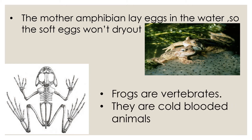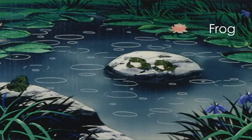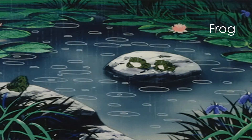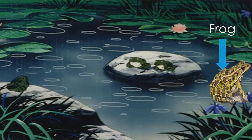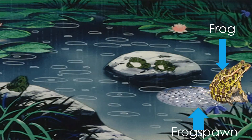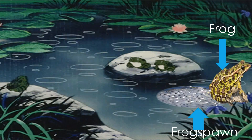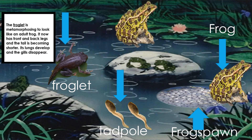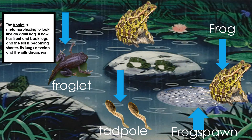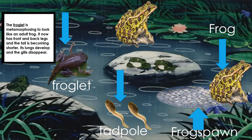Frogs are vertebrates. They are cold-blooded animals. Let us know about the life cycle of a frog: Frog spawn. Tadpole. Froglet. Adult frog.